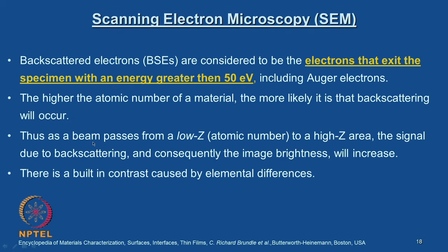As a beam passes from a low atomic number to a high atomic number area, the signal due to backscattering and consequently the image brightness will increase. There is a built-in contrast caused by elemental differences. So as the atomic number of the element increases, the scattering event also increases and you get increased image brightness. We will look at electron beam interaction and interaction volume in more detail later — this is just an introduction to how signals are classified and what kind of interactions occur.